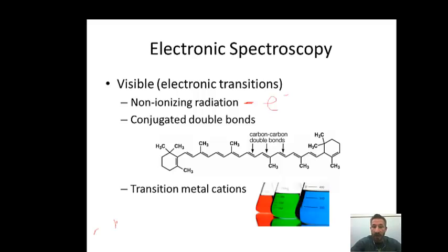We have conjugate double bonds. Conjugate means every other bond is a double bond, and that's why we call it a conjugate double bond. What we're going to be looking at here is beta-carotene, which is in carrots. This is important for transition metal cations.